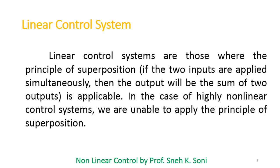Before starting with nonlinear systems, let's quickly revise linear systems. Linear control systems are those where the principle of superposition can be applied. If I have multiple inputs — say inputs A and B — and I apply them simultaneously, then my output will be the addition of the outputs received through each individual input. Whatever output I get from input A plus whatever output I get from input B gives the final output. Such a system is called a linear system because it follows the superposition principle.